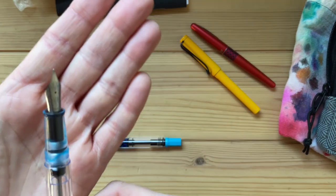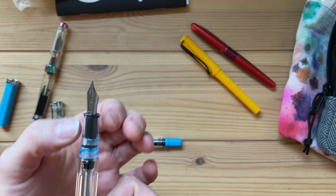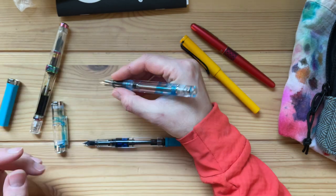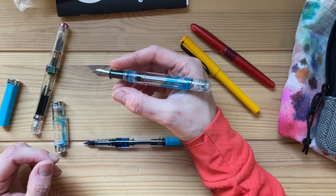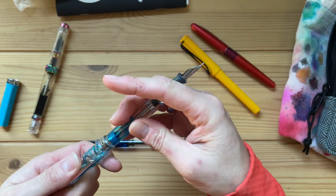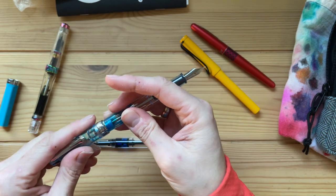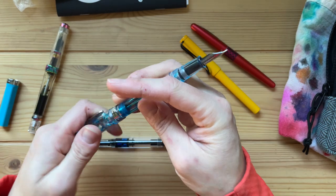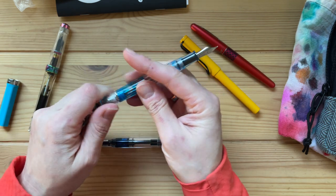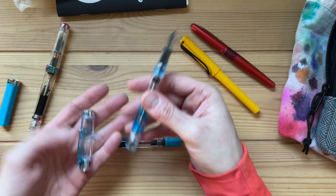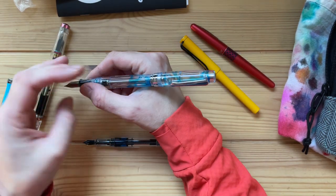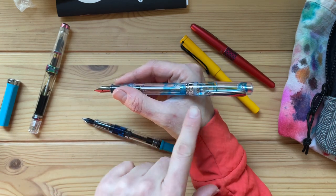Let's look at the section for a second. It is tapered towards the front. There is a step to the nib and feed. It sits nicely in my hand. It is also nicely balanced. It seems to be posting, but if I let it go, it will fall, tumble back over. So it is back heavy when it's posted.